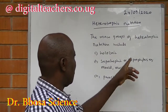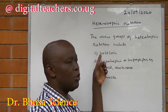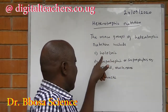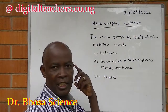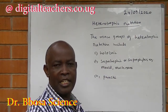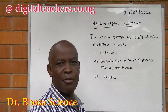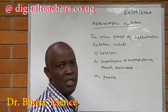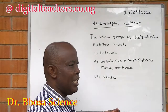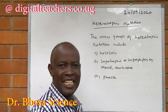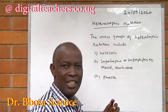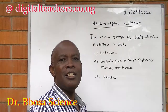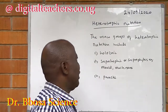There are many groups of heterotrophic nutrition. These include holozoic — which involves ingestion, digestion, absorption, assimilation, then egestion of undigested food.